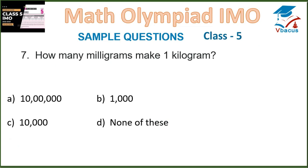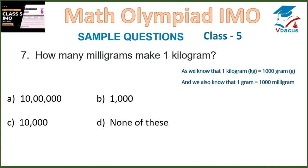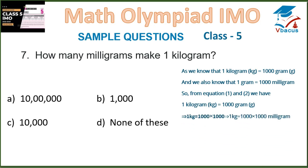Question 7: How many milligrams make 1 kilogram? As we know, 1 kilogram is equal to 1000 grams, and 1 gram is equal to 1000 milligrams. So from these two equations, 1 kilogram is equal to 1000 times 1000 milligrams, which is 10 lakh milligrams. That is in option A.